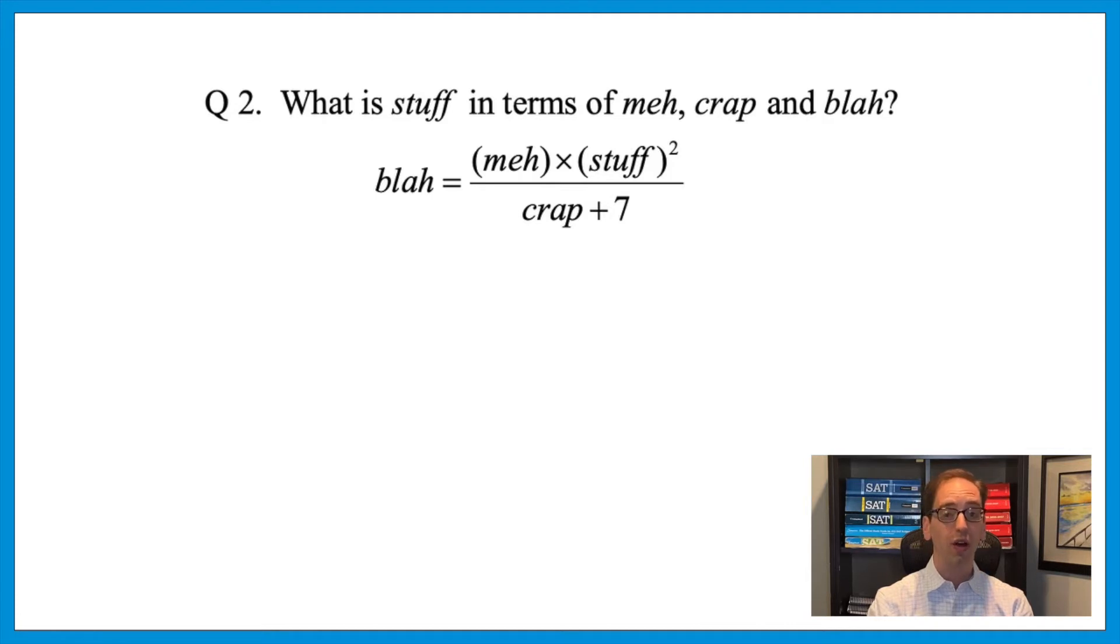And just like we did on the last one, you need to think about which terms should we move first. You want to start as far away as possible, and then get closer and get closer. So that denominator, crap plus 7, is where we want to start. We want to get that term out of the denominator over to the other side. And we do that by multiplying. That would then give us blah times crap plus 7 equals meh times stuff squared.